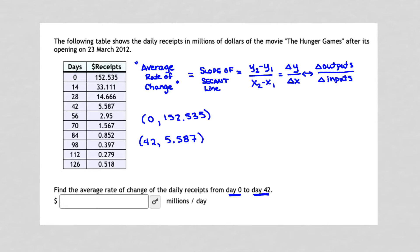So 42 days after the 23rd of March, the daily receipts were 5.587 millions of dollars. To get the average rate of change from 0 to 42, we simply take the slope of the line through those two points. So we're simply going to do y2 minus y1 over x2 minus x1. Subtract the y values and then subtract the x values.